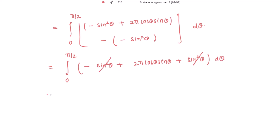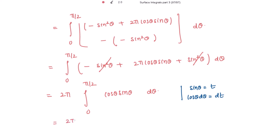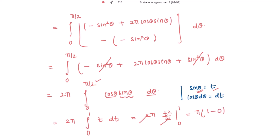Taking 2π outside, the remaining integrand is cos θ sin θ dθ with limits from 0 to π/2. Let sin θ = t, so cos θ dθ = dt. When θ = 0, t = 0; when θ = π/2, t = 1. So this is 2π times the integral of t dt from 0 to 1, which equals 2π times t²/2 evaluated from 0 to 1. The 2's cancel, giving π × (1² − 0) = π. So the surface integral also equals π.